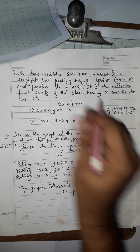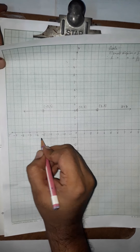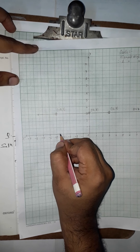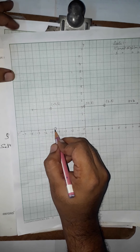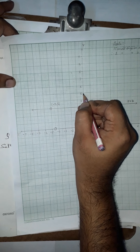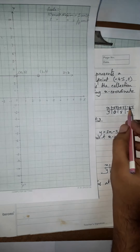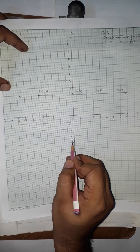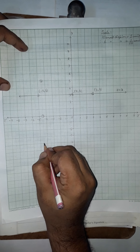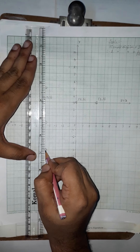These three coordinates — (−4.5, 0), (−4.5, 5), and (−4.5, −4) — are to be plotted on the graph paper. The point (−4.5, 0) lies on the x-axis between −4 and −5. The point (−4.5, 5) is at x = −4.5 and y = 5 in the positive y direction. The point (−4.5, −4) is at x = −4.5 and y = −4 in the negative y direction.